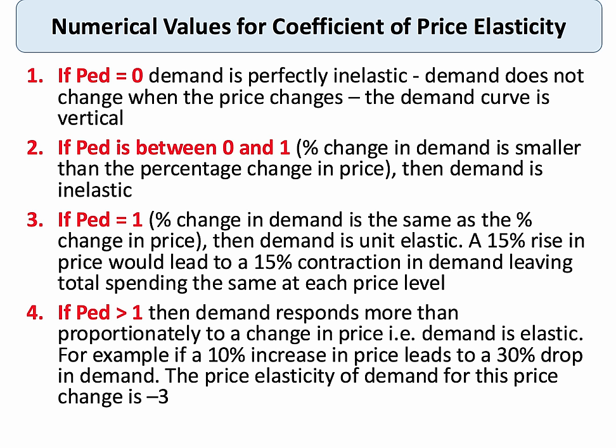A coefficient value of between zero and one means that demand is inelastic — demand is relatively unresponsive to a change in price. A coefficient of one means the percentage change in demand is exactly the same as the percentage change in price, and demand is unitary elastic. That will leave total spending the same at each price level.